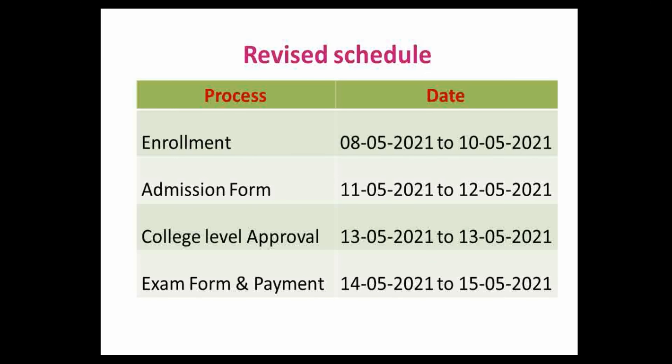So here you can see the revised schedule. If the enrollment is pending for some students for any reason, then they can do the enrollment process between 8th May 2021 to 10th May 2021. After that they can fill the admission forms between 11th May 2021 to 12th May 2021. After filling the admission form, that is subject selection, the college level approval can be done on 13th May 2021.